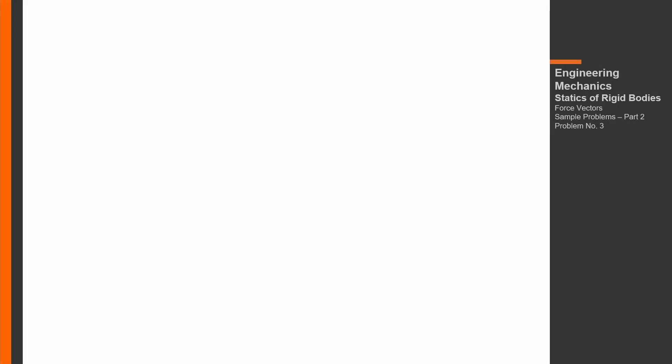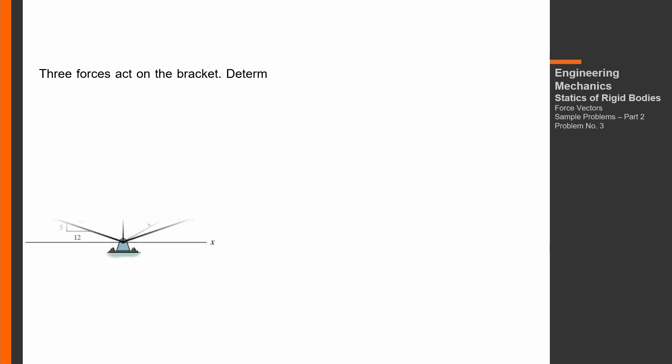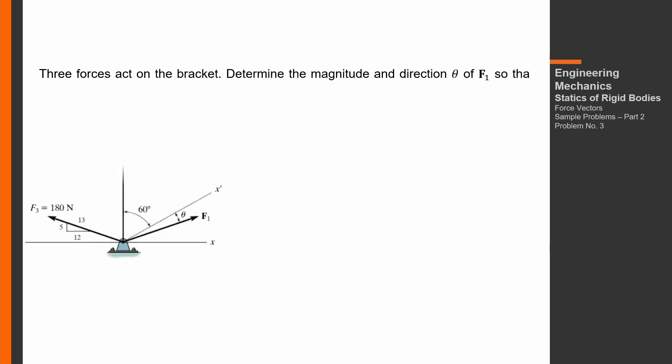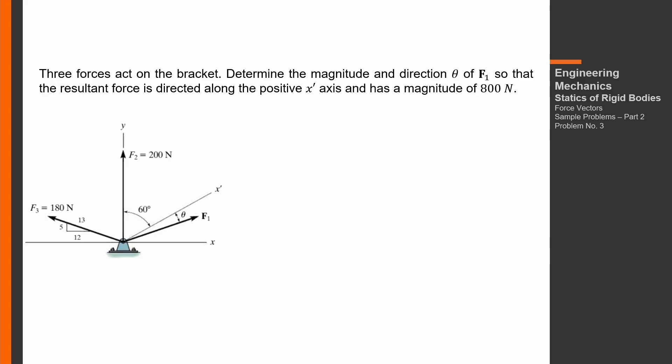Number 3. Three forces act on a bracket. Determine the magnitude and direction theta of F1 so that the resultant force is directed along the positive x' axis and has a magnitude of 800 N. So, we need to find theta and F1 given that FR equals 800 N directed along the x' axis.